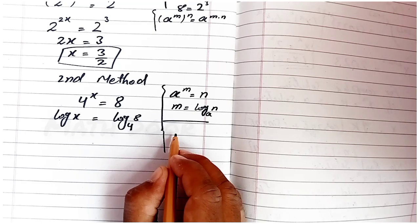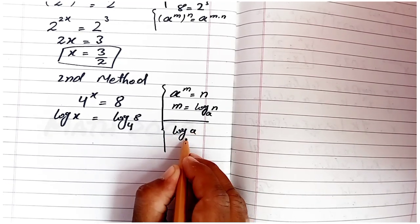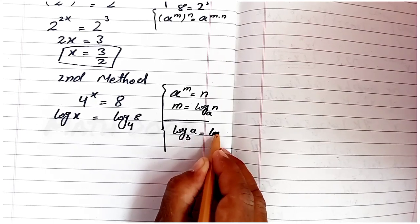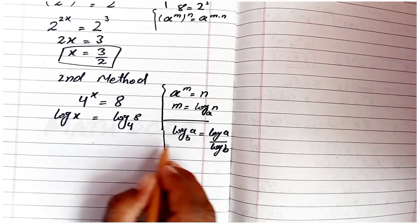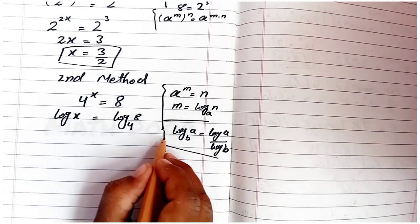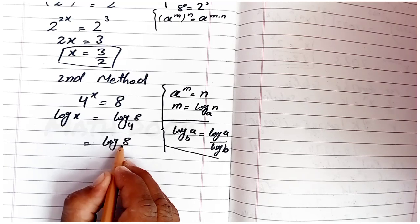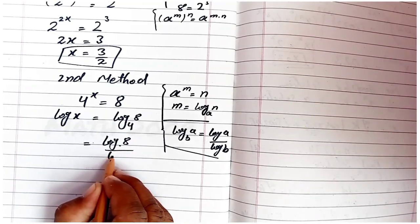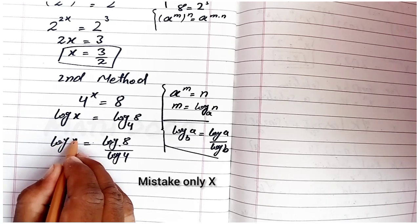Now we have another logarithmic rule: log base b of a equals log a over log b. So we apply this rule here and write x = log 8 over log 4.